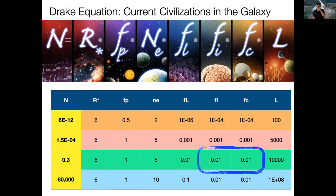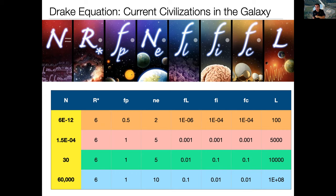So what's the power of the Drake equation? The power is for you to say, Larson, I think you were too pessimistic — I'd like to change those values. And I'd say great, change those values in your spreadsheet and let's see how it changes the implications for our searches for extraterrestrial life in the galaxy. If you change both of those fractions to 0.1 — 1 in 10 planets develop intelligent life, and of those, 1 in 10 develop radio telescopes — then it changes from less than 1 to 30. There could, at this very moment, be 30 alien civilizations strewn across the Milky Way galaxy that maybe we could communicate with.